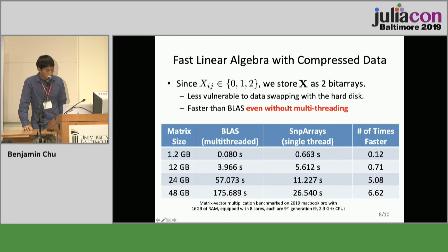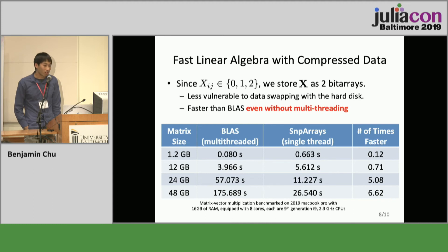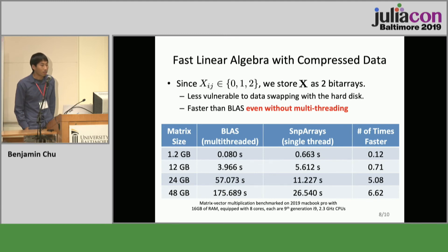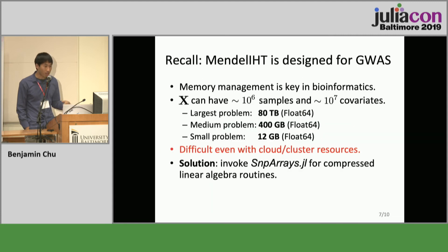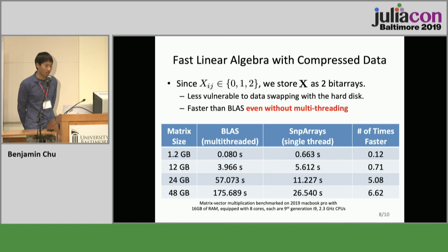Even though SnpArrays is single-threaded, as datasets get bigger the speed gains are quite remarkable. When the matrix is small it's about 10 times slower than BLAS, but as data gets bigger it gets faster and faster. The only reason is memory: it doesn't have to do expensive data swapping with the hard disk — you can load the whole thing into RAM. All this benchmark was done on a personal laptop, so on a 400 gigabyte dataset a double-precision matrix would just be completely impractical. This is really where our package is useful.